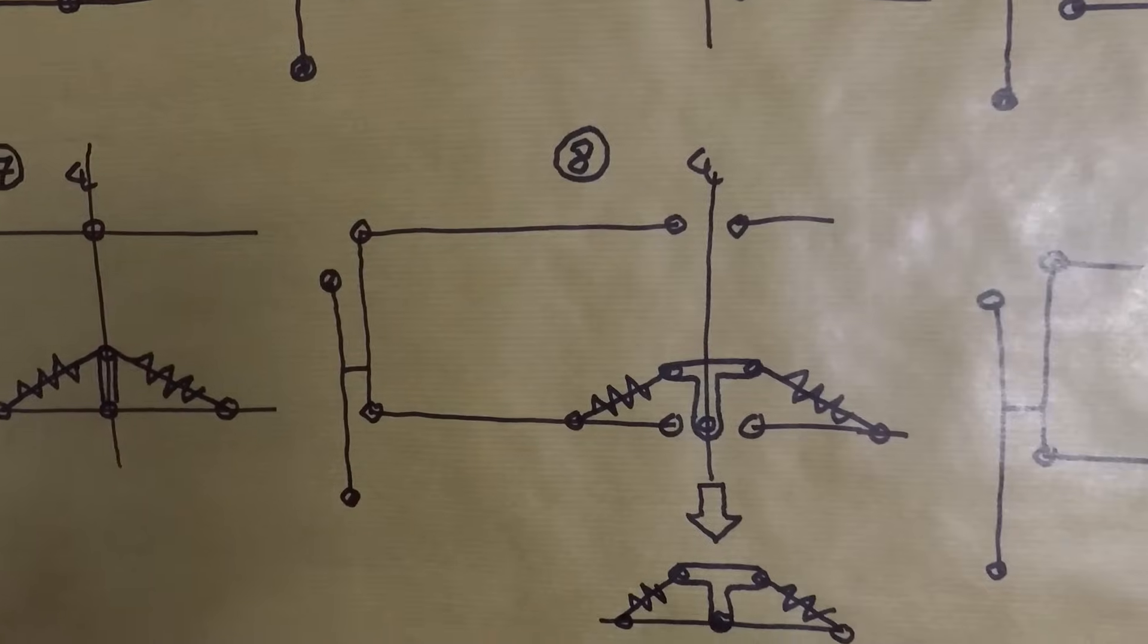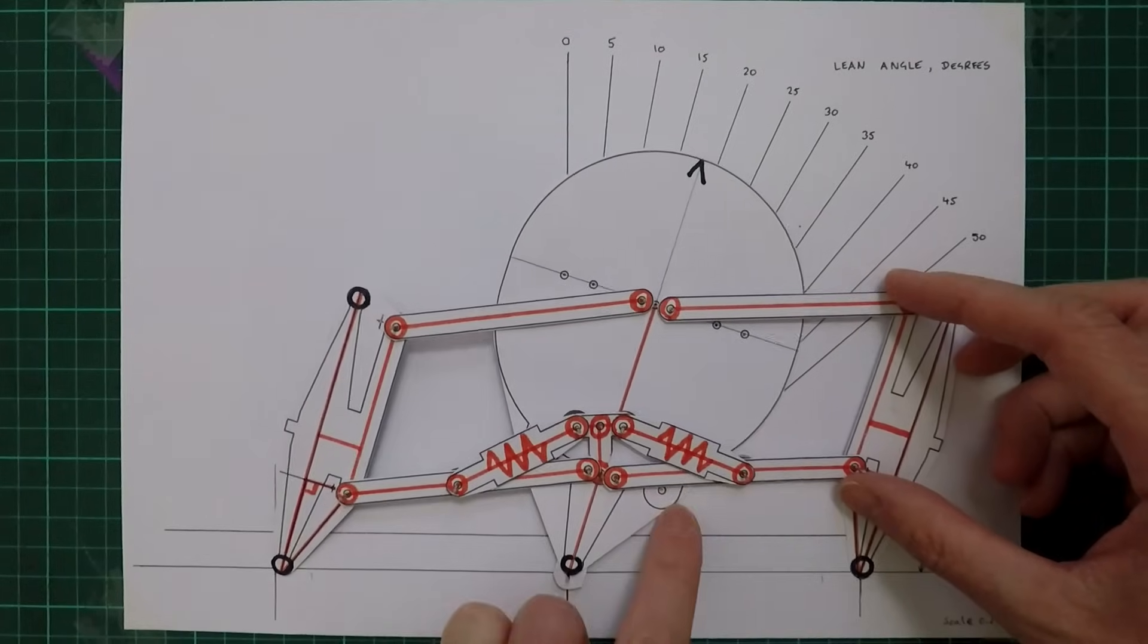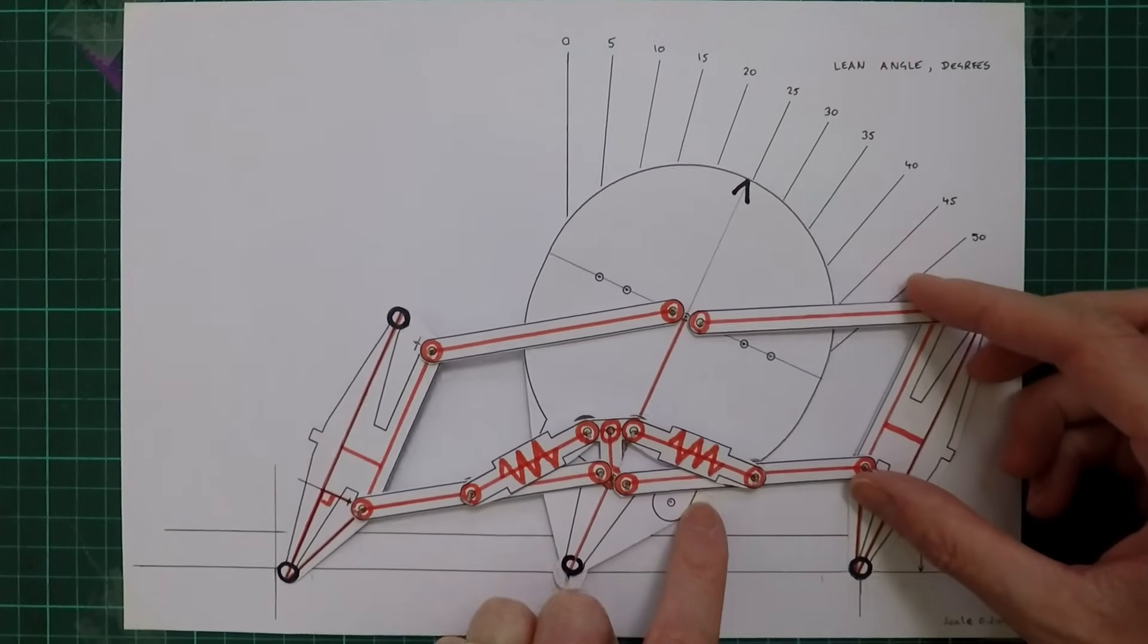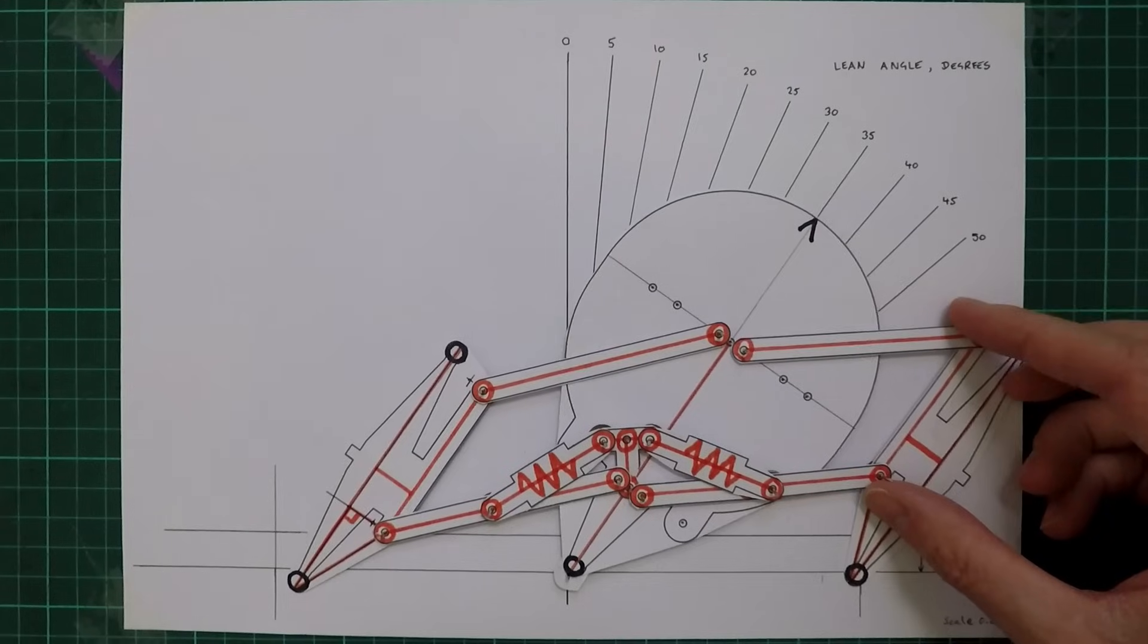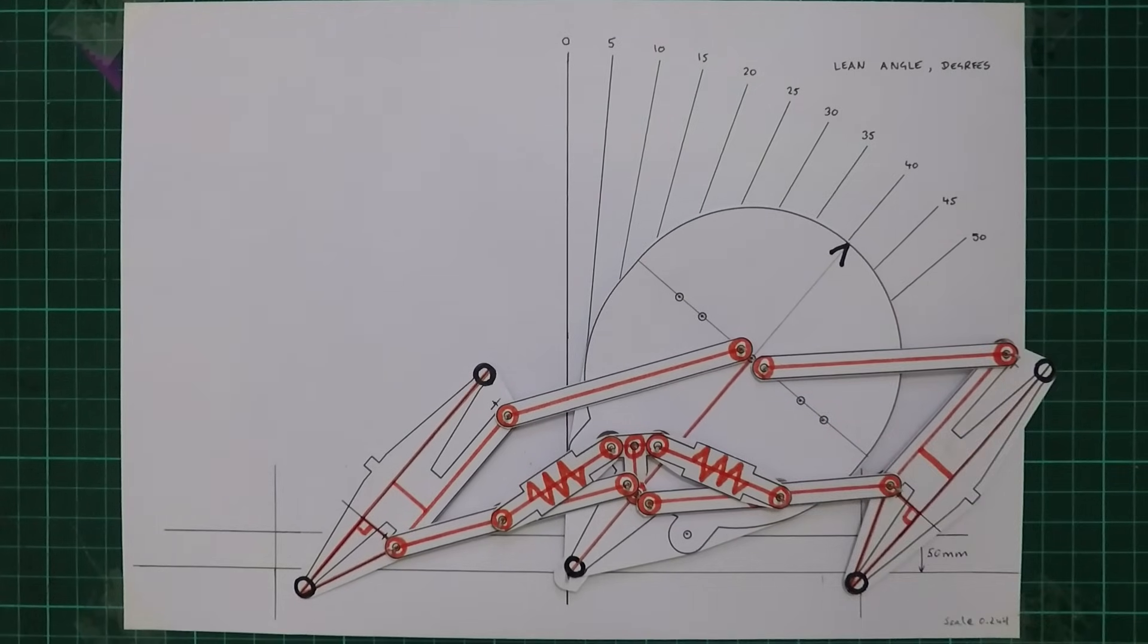This next design is a variant of design 5 and also has two shocks, this time connected to a pivoting T piece. We immediately start to get problems under lean with about 2 or 3 centimetres of body rise at 35 degrees. There's also quite a lot of tyre scrub and this all gets a lot worse at 45 degrees.